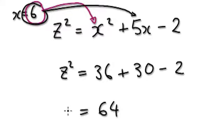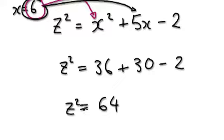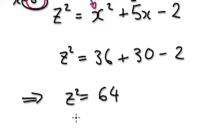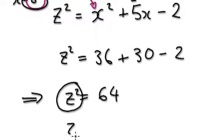So z squared equals 64. Now take the square root of both sides. On this side, if you square root z squared, you're going to get z — because the square and square root are total opposites of each other, so you just get z.